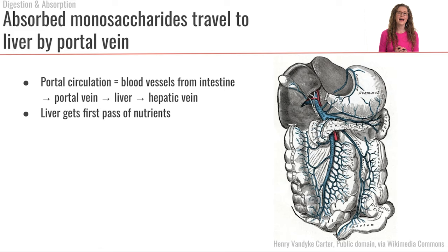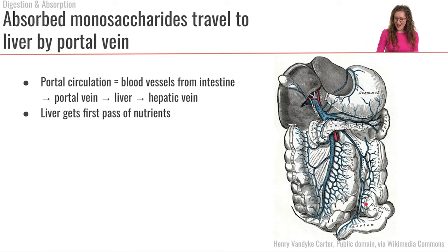Once monosaccharides are in the bloodstream, that blood goes directly to the liver through the portal circulation. All blood vessels absorbing from the intestines drain into the portal vein, which goes directly to the liver. So the liver gets the first pass of monosaccharides absorbed from our food — it will keep some and release others to continue through the rest of the circulation.